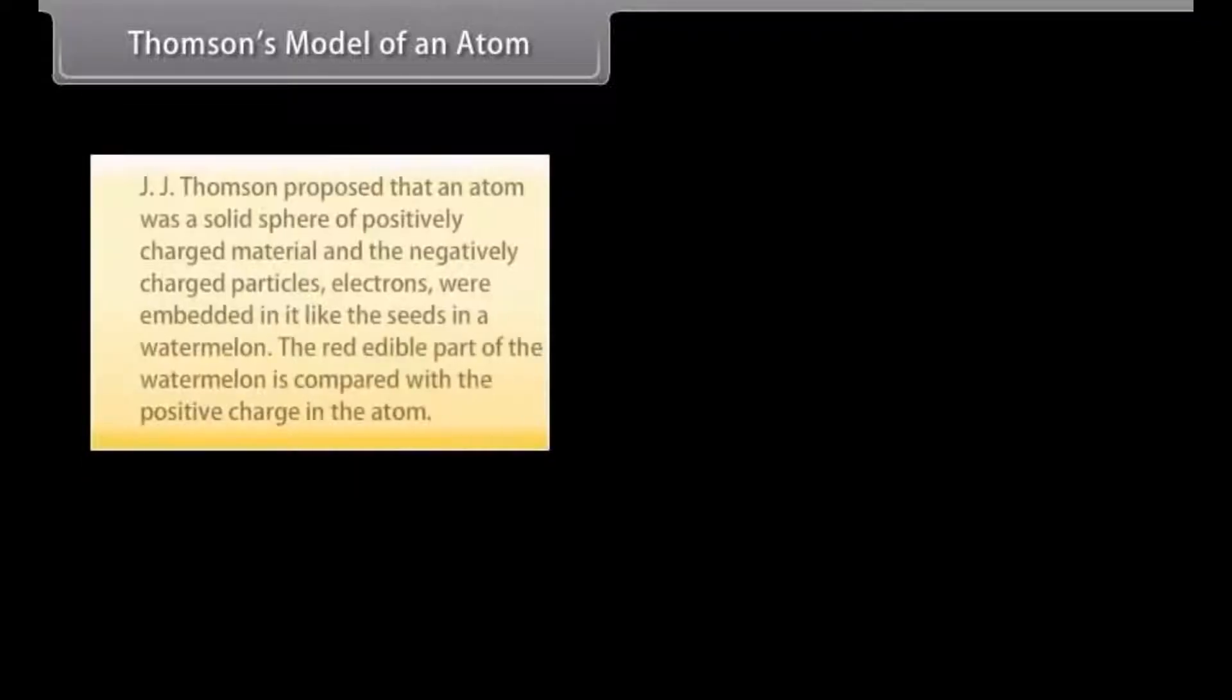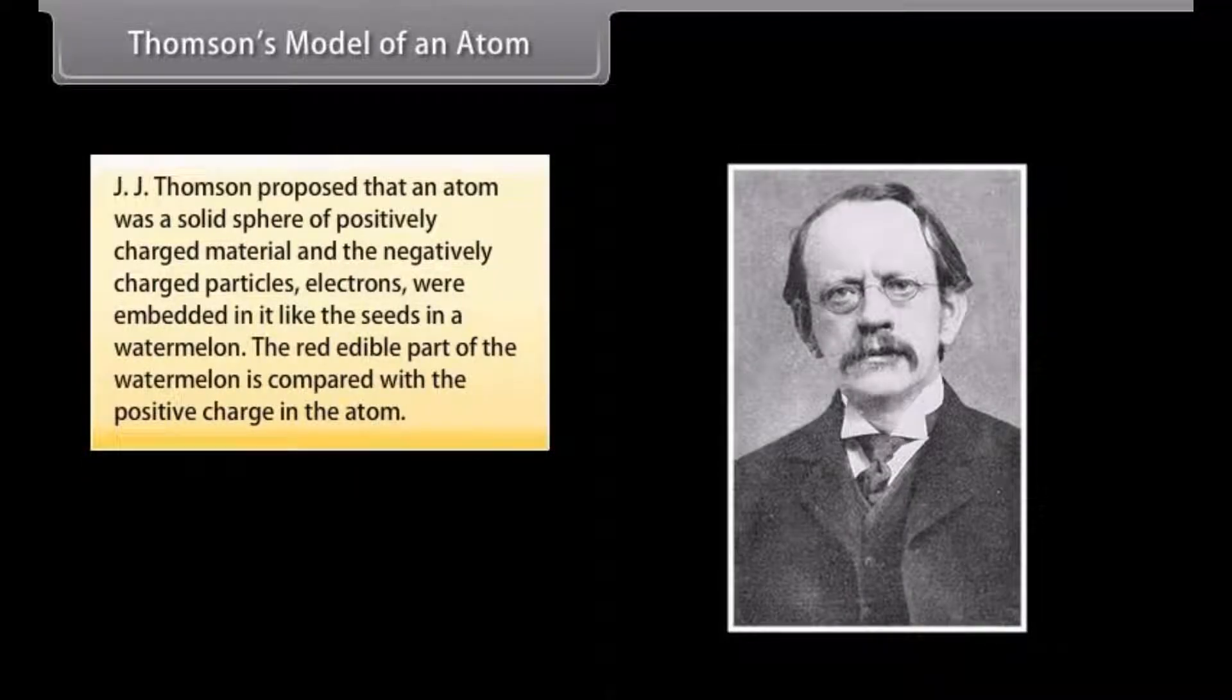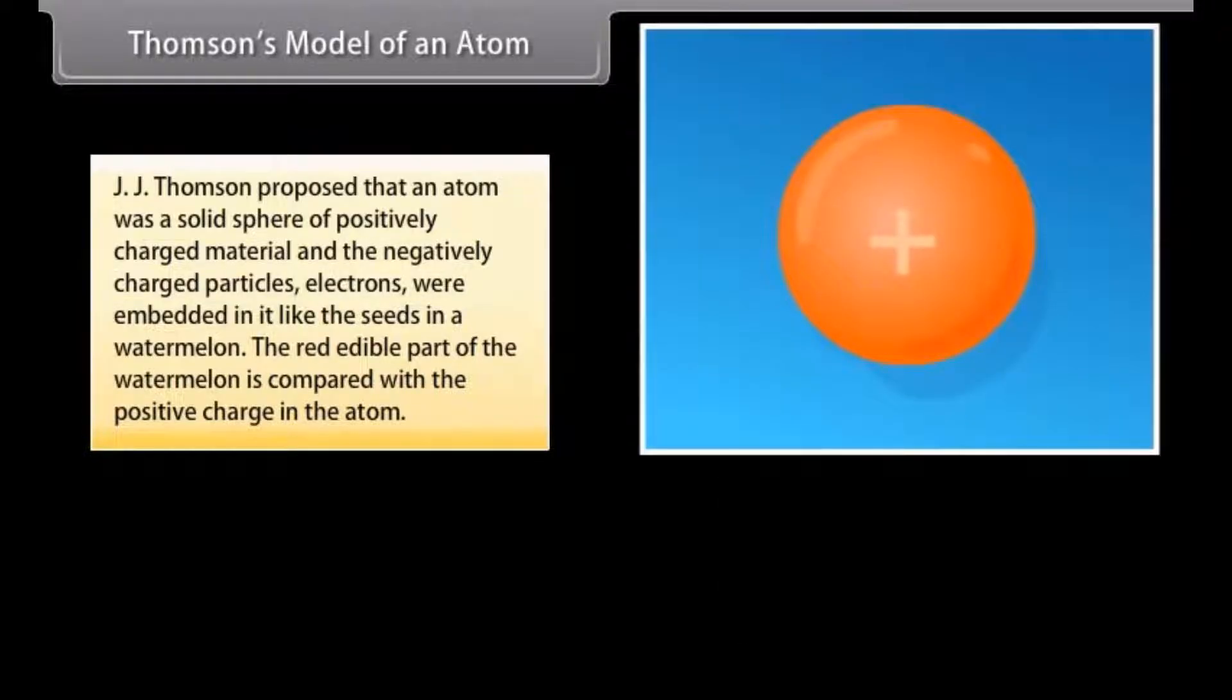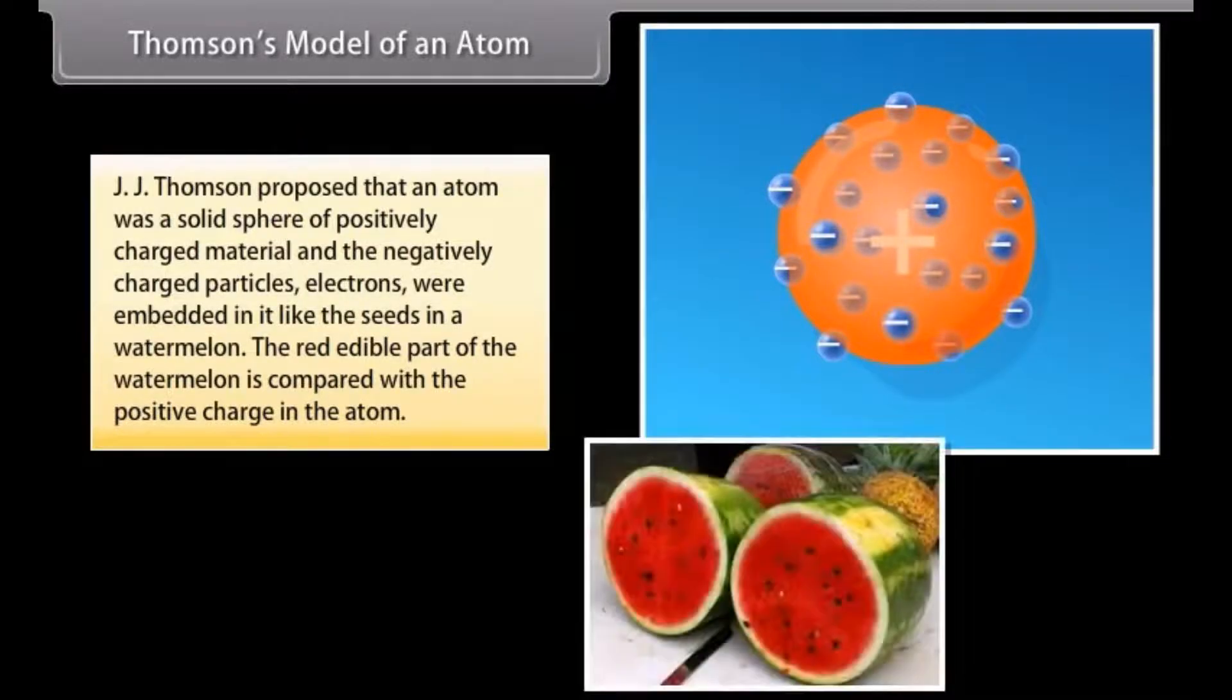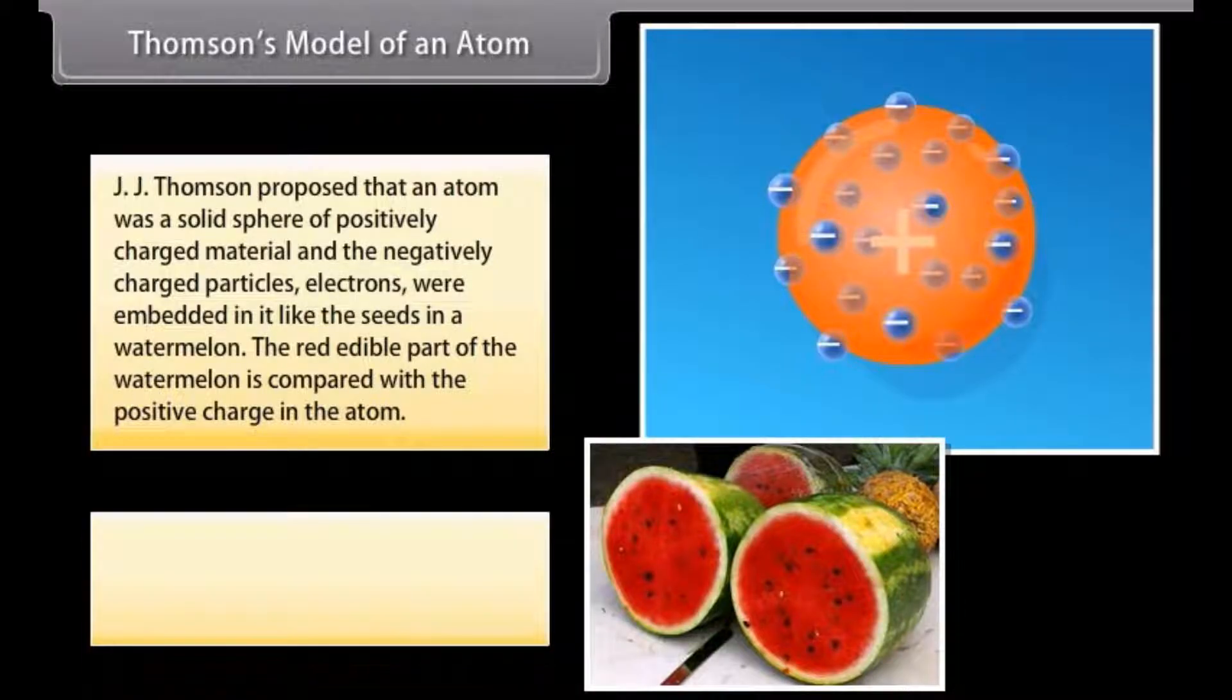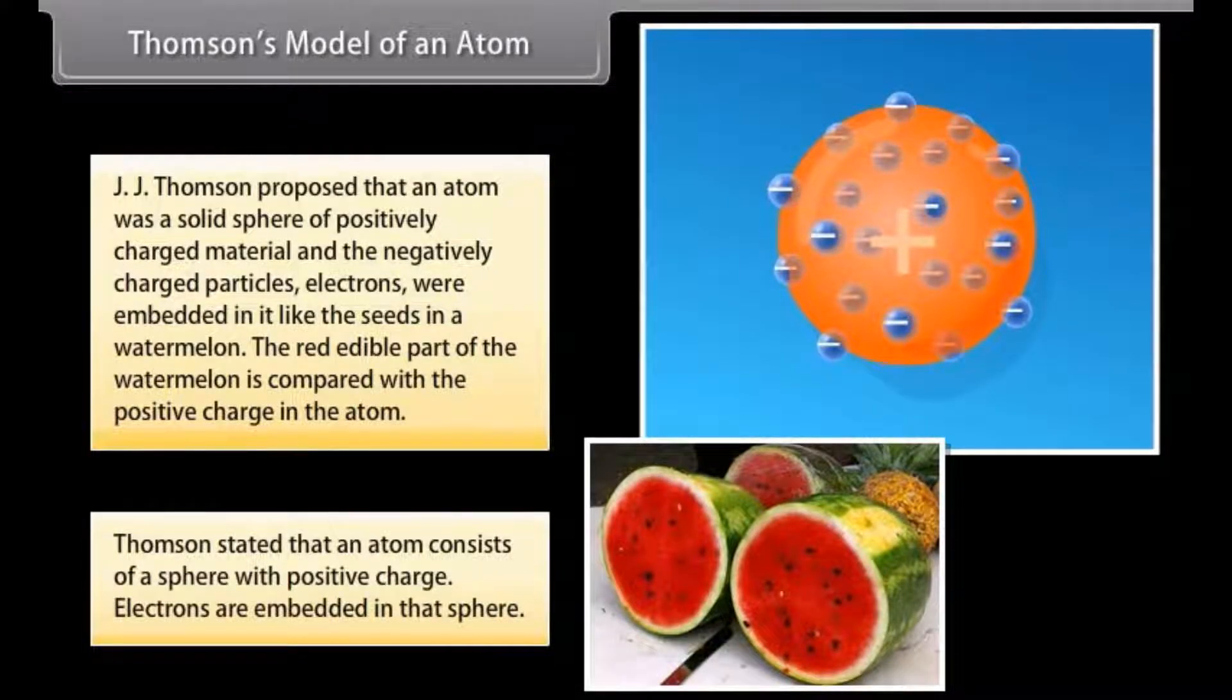Thompson's Model of an Atom. J.J. Thompson proposed that an atom was a solid sphere of positively charged material, and the negatively charged particles, electrons, were embedded in it like the seeds in a watermelon. The red edible part of the watermelon is compared with the positive charge in the atom.